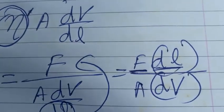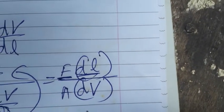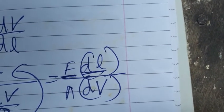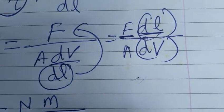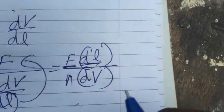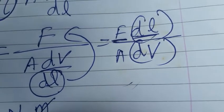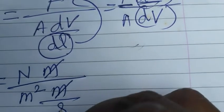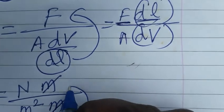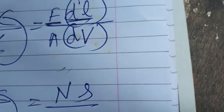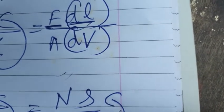The SI unit of length is meter. The SI unit of area is meter squared (length times breadth). Velocity is displacement by time, so its unit is meter per second. Substituting: meters cancel, and the second from the denominator moves to the numerator, giving Newton·second per meter squared.